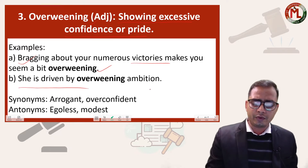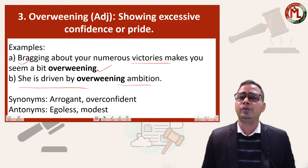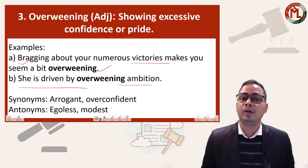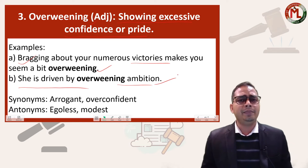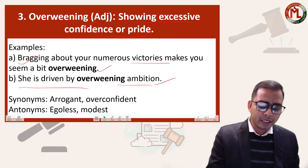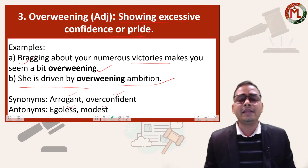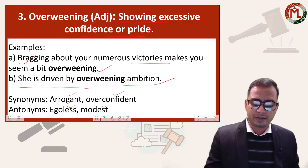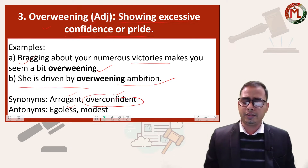Another example: 'She is driven by overweening ambition' — meaning her ambitions are there but they are a bit excessive. The synonyms are 'arrogant' and 'overconfident,' and the antonyms are 'egoless' and 'modest.' So you can replace 'overconfident' with 'overweening' — they are interchangeable in these situations.